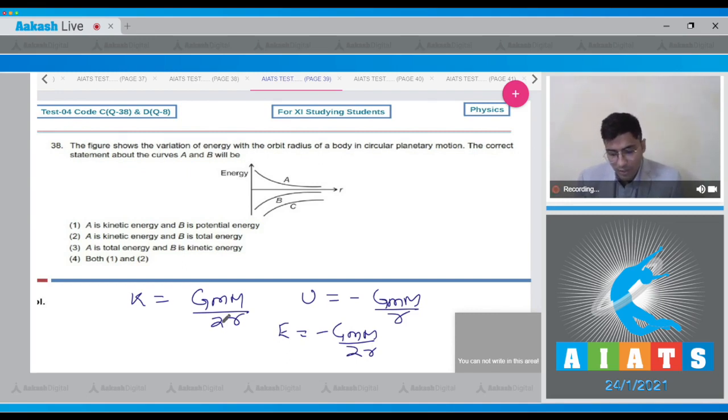Now the graph is symmetric about x-axis as shown. We can see that the magnitude of kinetic energy is equal to the magnitude of net mechanical energy. And hence for this question, the correct answer should be option 2.